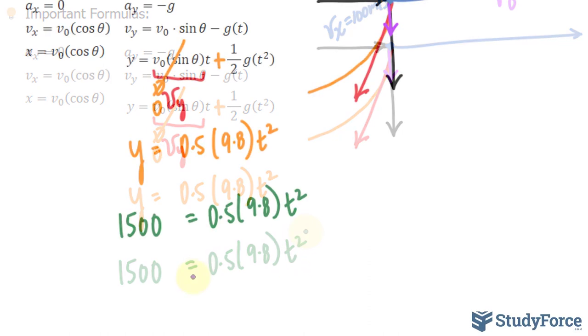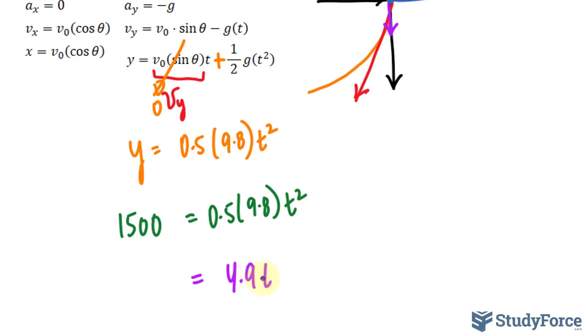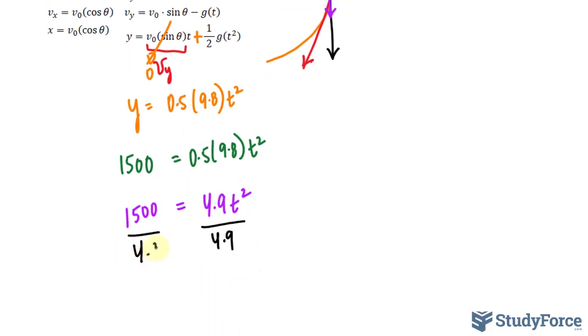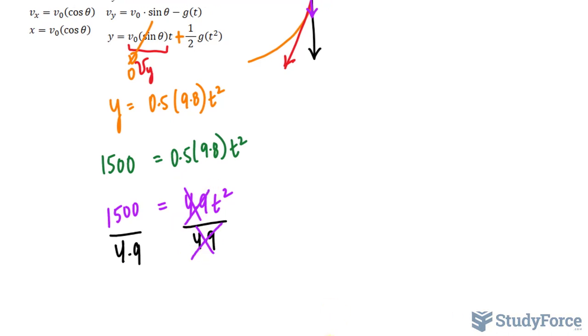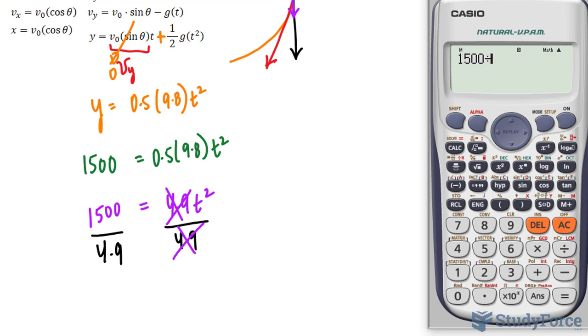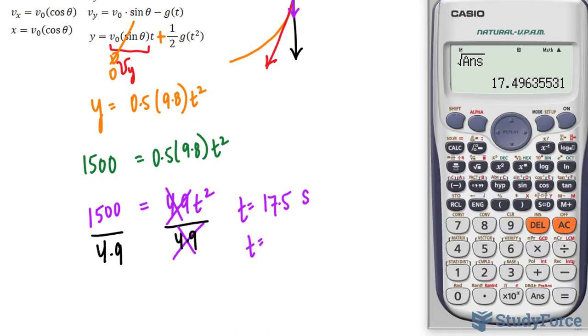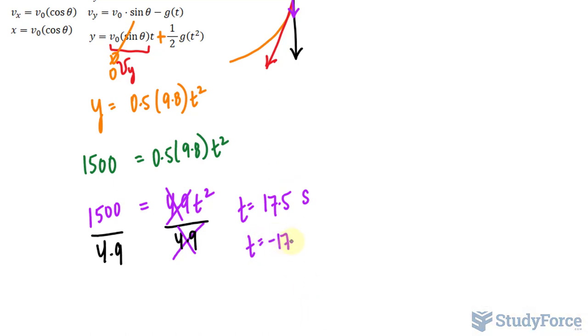Next, I'll simplify the right side. We have 4.9t² and 1,500 on the left side. Dividing both sides by 4.9 will give us two t values, one being positive, one being negative. Using our calculator, we have 1,500 divided by 4.9, and then square rooting this value, we end up with t = 17.5 seconds. Another t value will be the opposite of this, so negative 17.5 seconds.